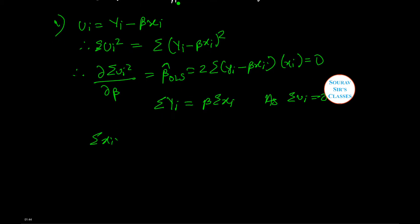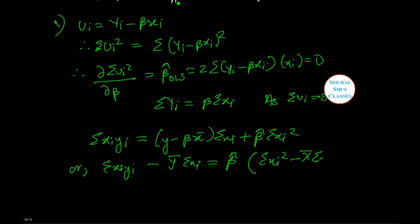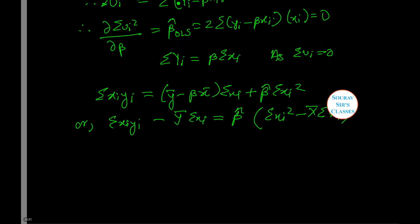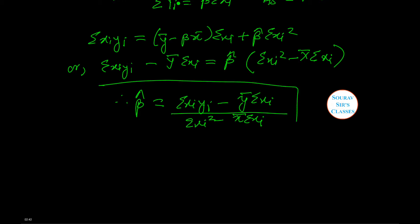Now, summation x_i y_i equals summation x_i (y_i minus beta x_i), which gives summation x_i y_i minus y-bar summation x_i equals beta cap times summation x_i squared minus x-bar summation x_i. Simplifying, summation x_i y_i minus y-bar summation x_i divided by summation x_i squared minus x-bar summation x_i gives us the OLS estimator for beta.